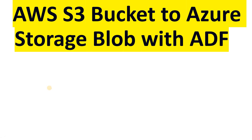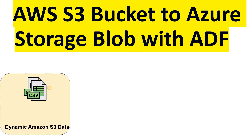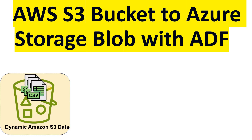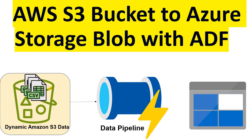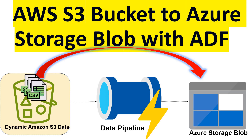In this video I will show you how to migrate data from AWS cloud to Azure cloud. We will see how to migrate your CSV data from AWS S3 bucket to Azure storage blob using ADF, that is Azure Data Factory. We have a lot of CSV file data in the Amazon S3 bucket, and we'll build a data pipeline which will migrate the data from the source to Azure storage blob, so the data gets completely migrated as-is from AWS cloud to Azure cloud.